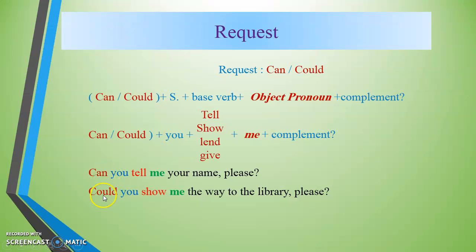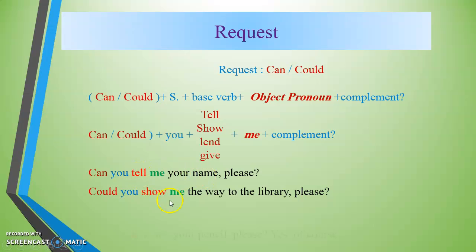Another example: 'Could you tell me the way to the library, please?' or 'Can you show me the way to the library, please?' These are polite requests using can and could with object pronouns.